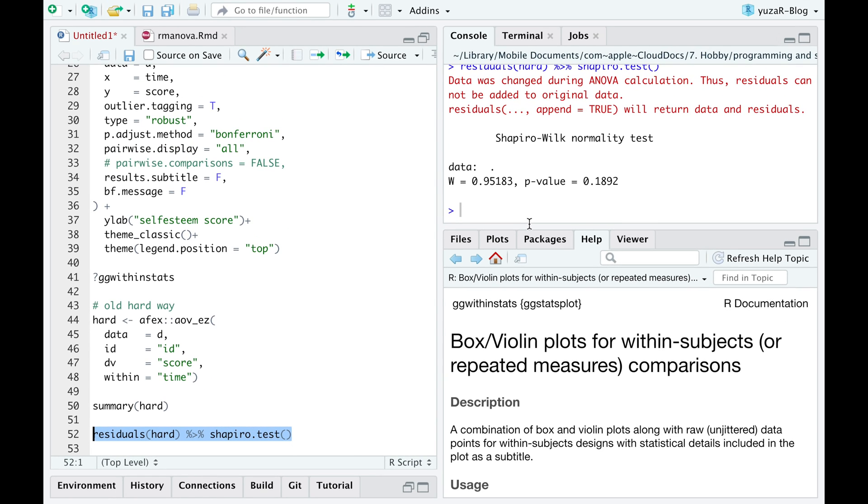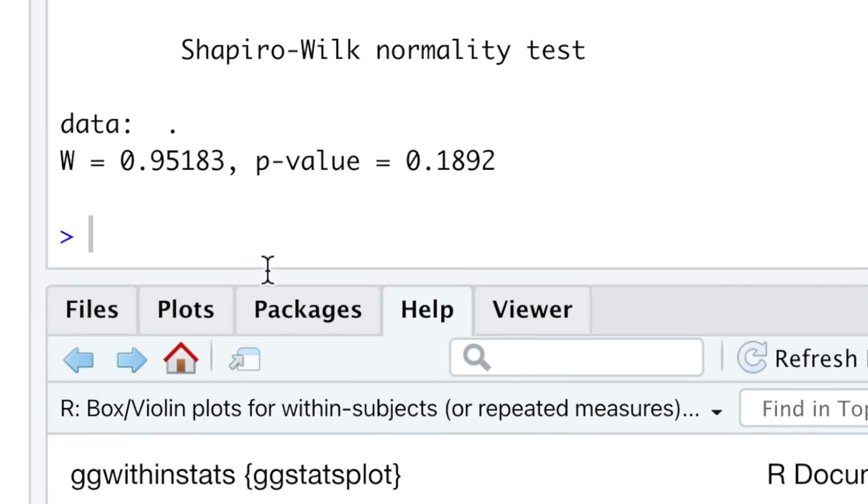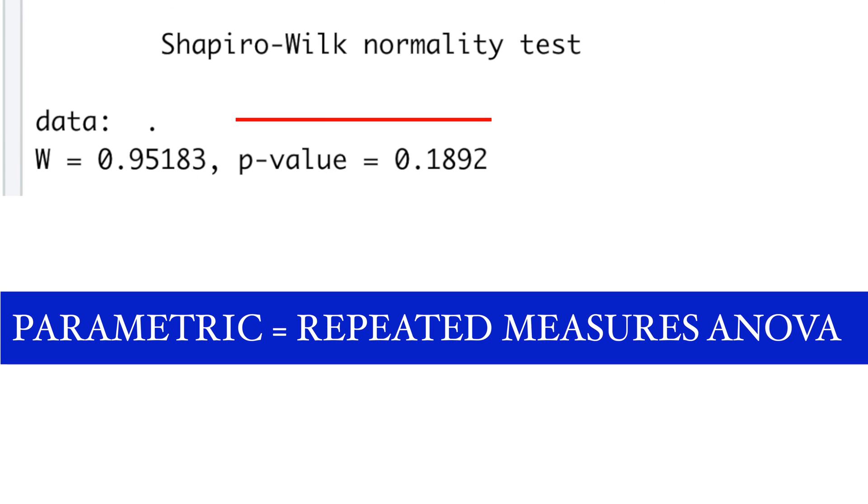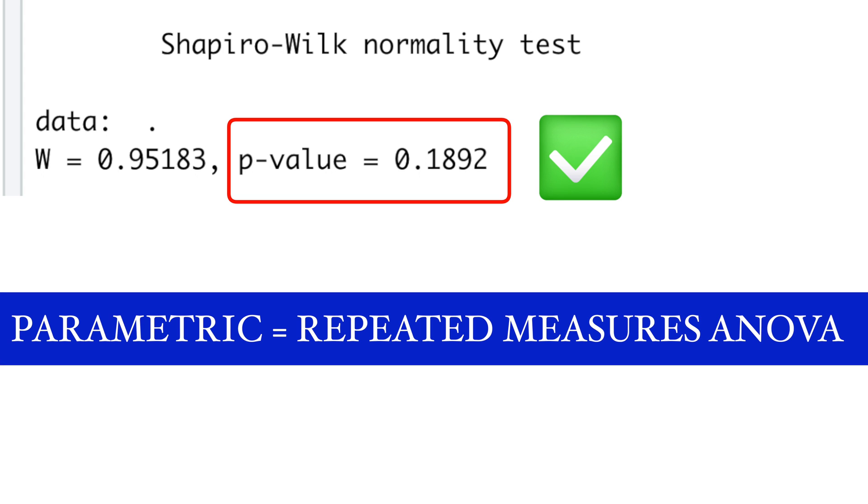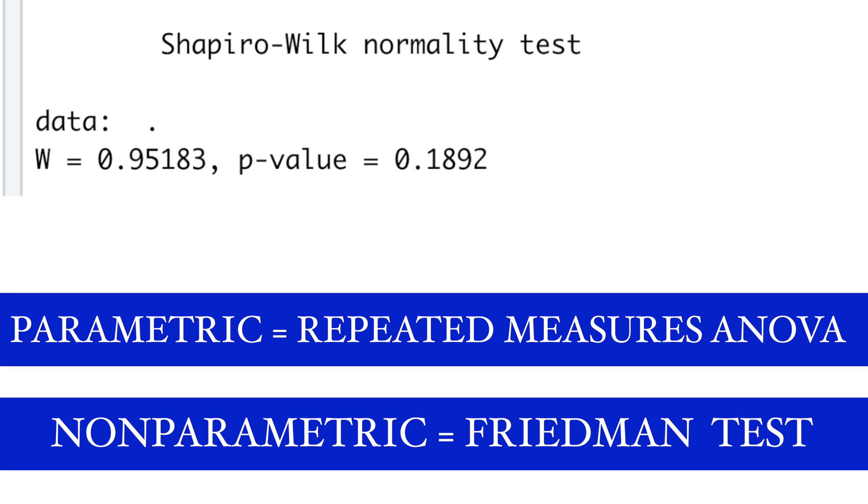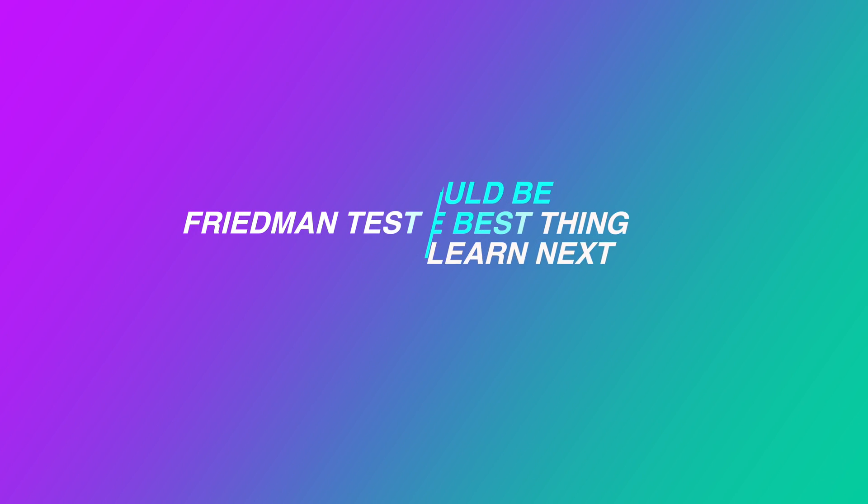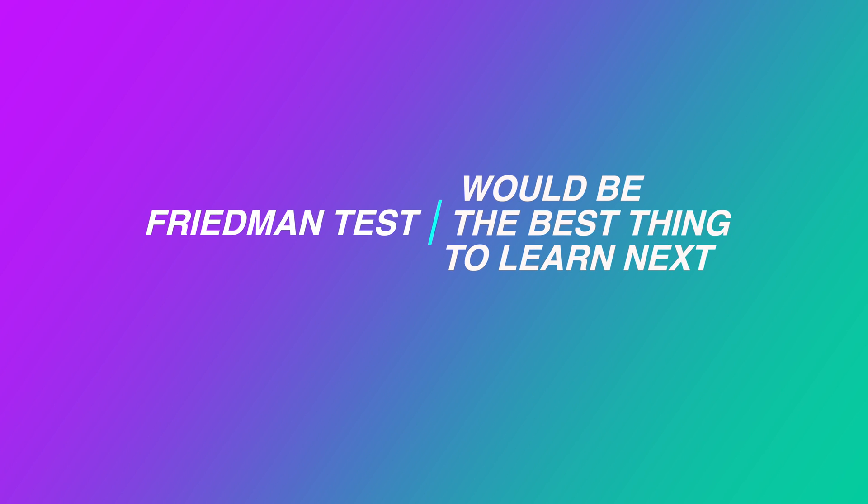Secondly, instead of checking the normality of thousands of groups, we can check the normality of the residuals of our ANOVA model, where all groups are already included. We then decide whether we stay with the parametric repeated measures ANOVA, if residuals are normally distributed, or go to the non-parametric Friedman test, if residuals are not normally distributed.